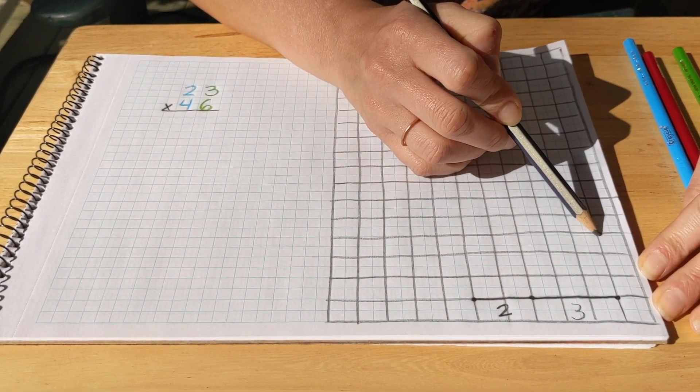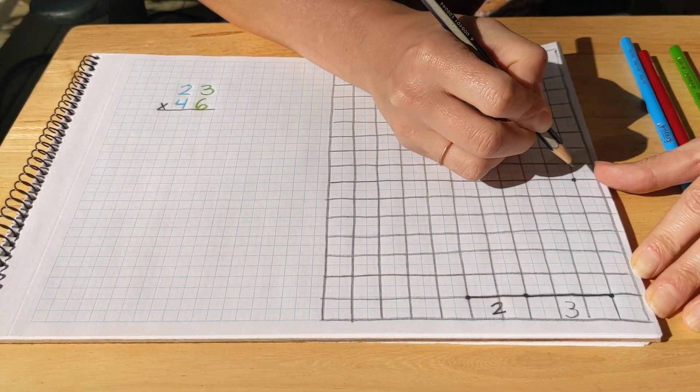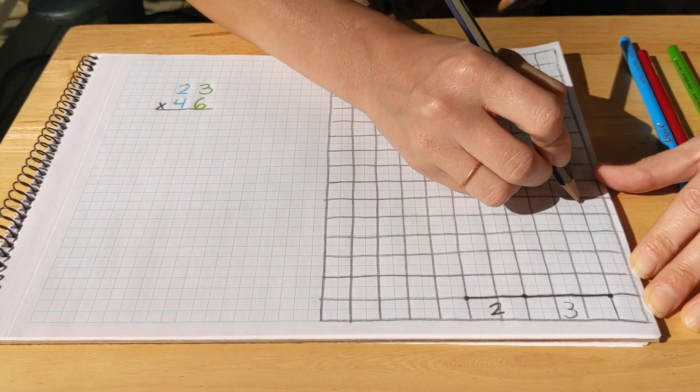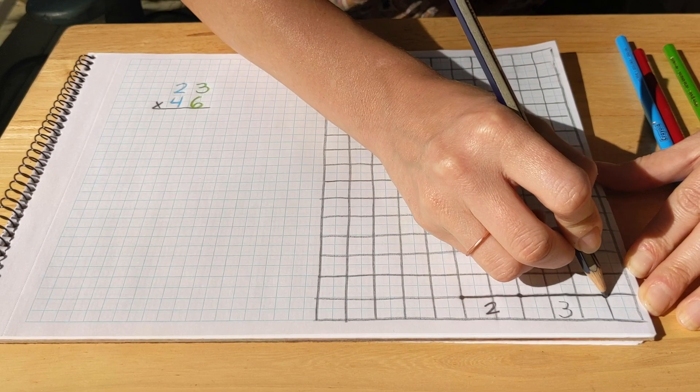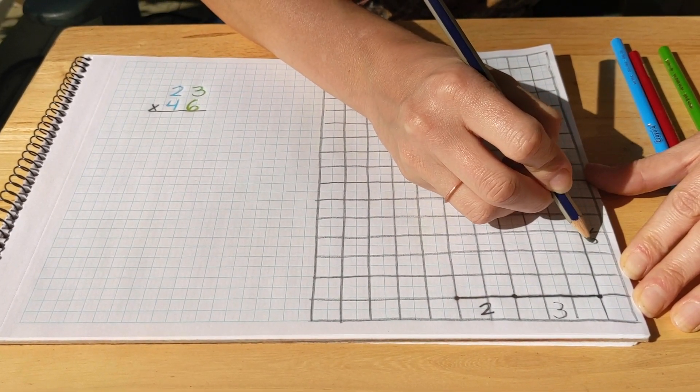So let's count out six. One, two, three, four, five, six. So now I'm going to put my dot there. And I'm going to connect those dots. So there are our six units.